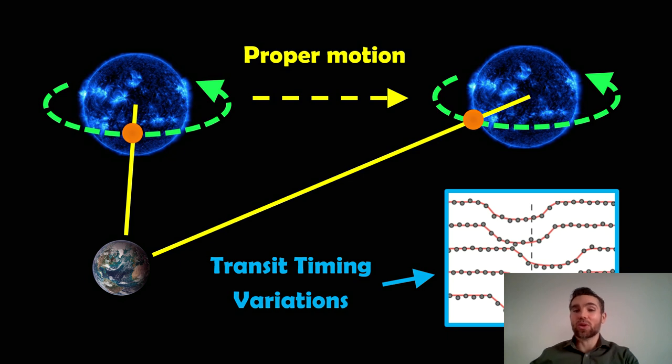There is actually parallax, which I've already done a video on, and there is proper motion. This is to do with the movement of the star relative to us in the sky, and this can actually change the time between each successive transit.